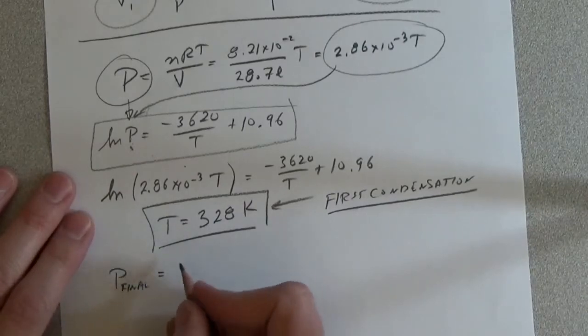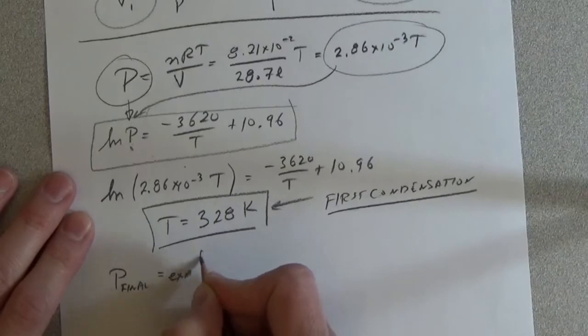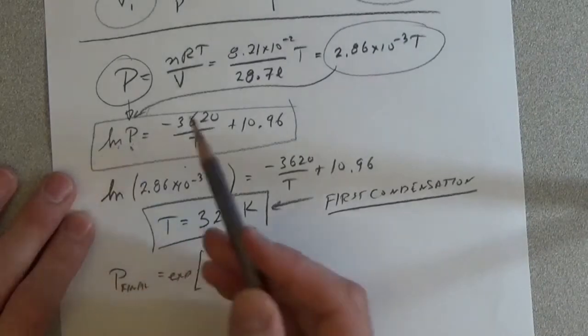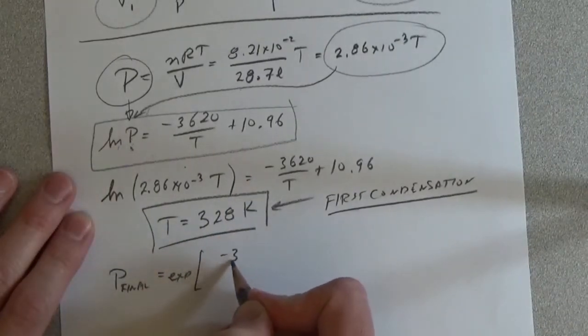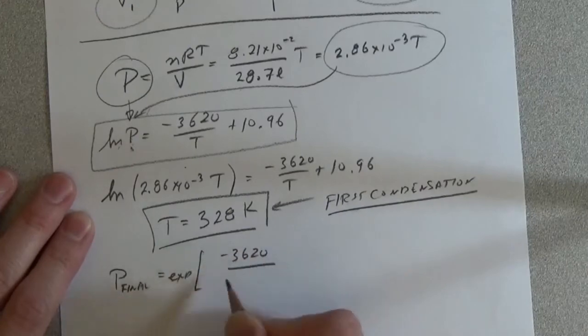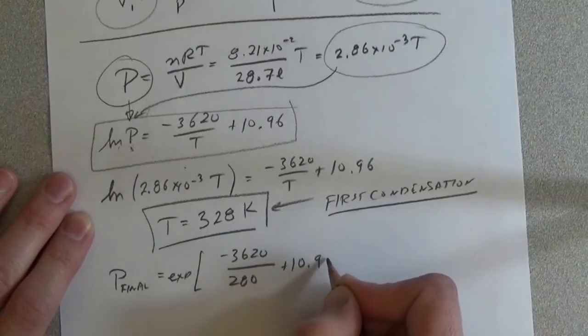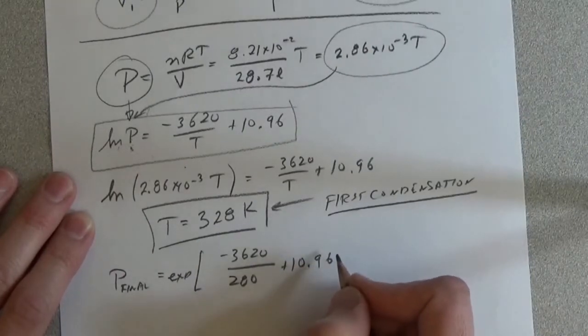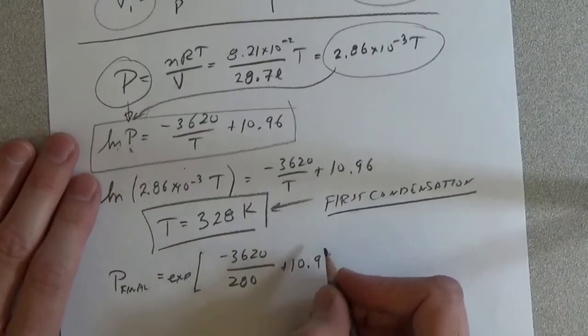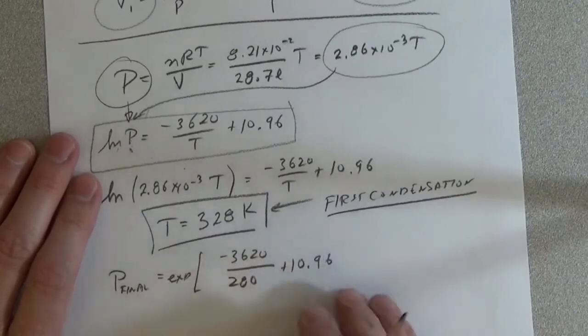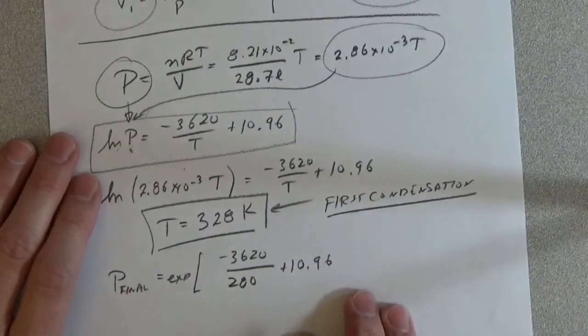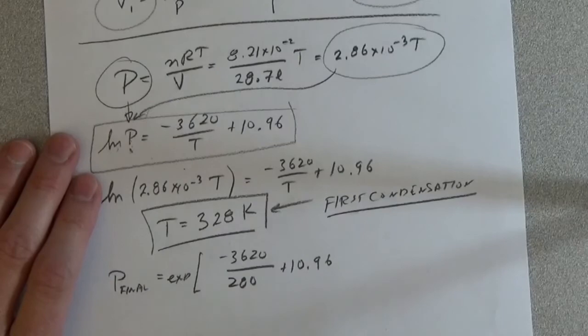P final is equal to exp, so we're getting rid of the natural log, of minus 3620 over 280 plus 10.96. Or sorry, should be 9.96.